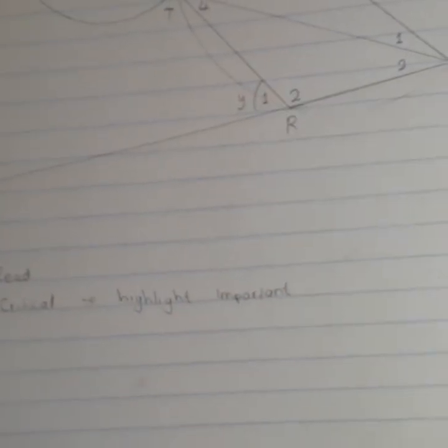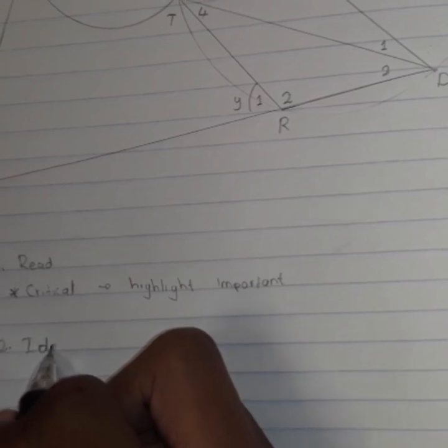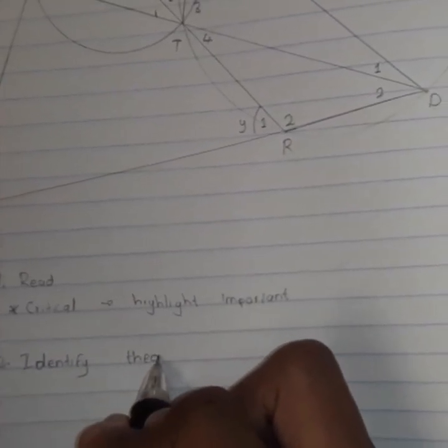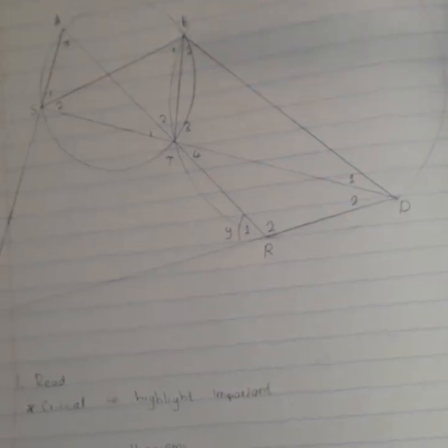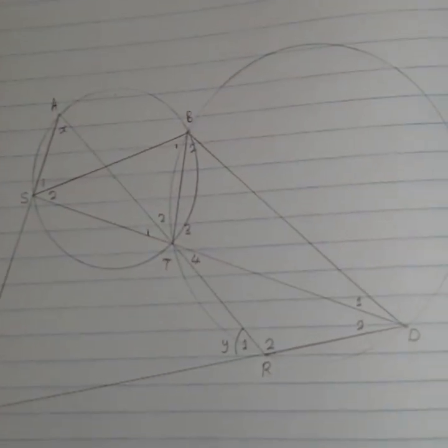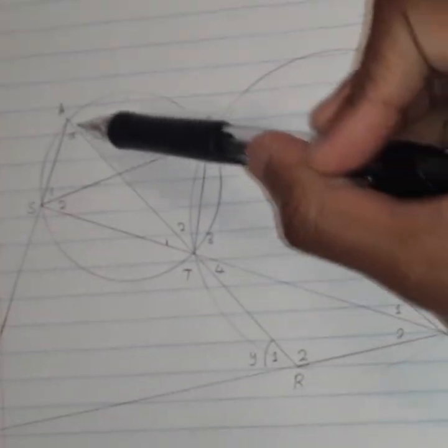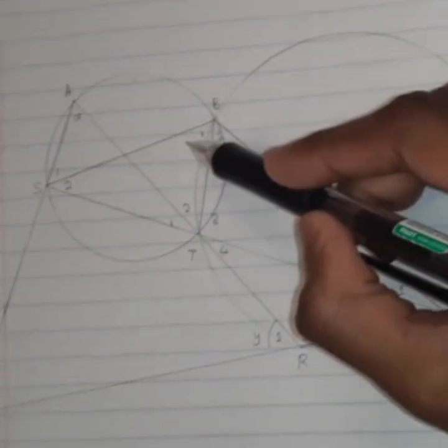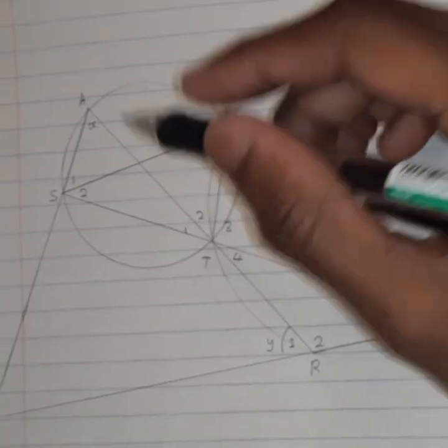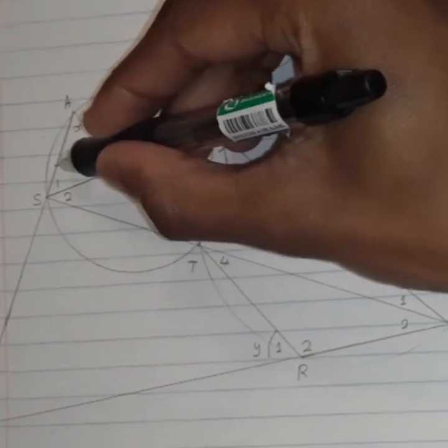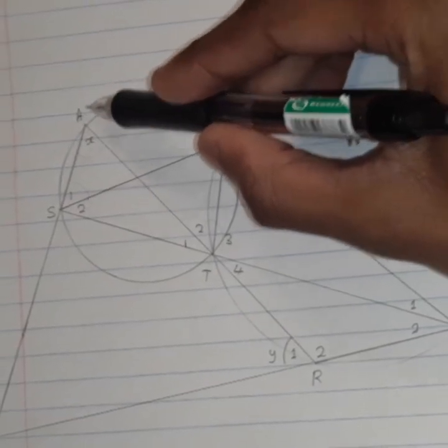The second step you need to do is to identify all theorems that are available in this diagram. Looking at these two cycles, one theorem you can identify is if you look at circle ASTB, that's your theorem 5. Theorem 5 says that this angle and that angle are supposed to be equal, angles subtended by the same chord.